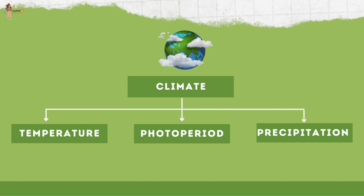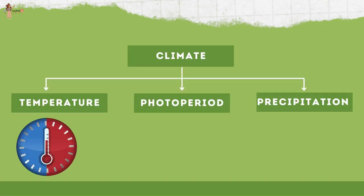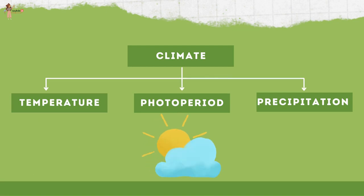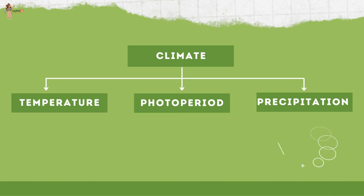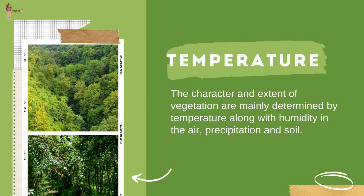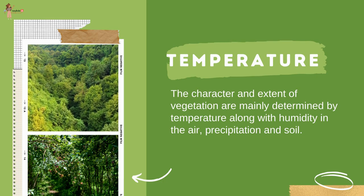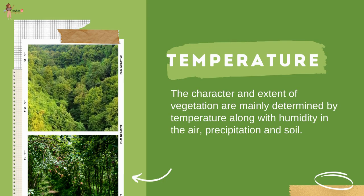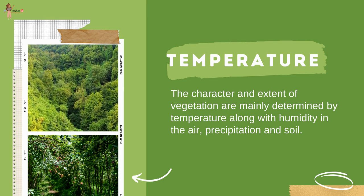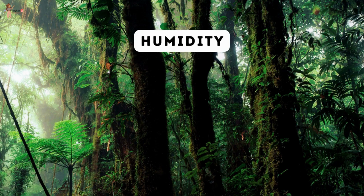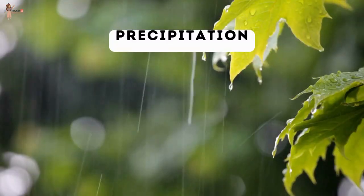The next factor is climate, which includes temperature, photo period and precipitation. The character and extent of vegetation are mainly determined by temperature along with humidity in the air.